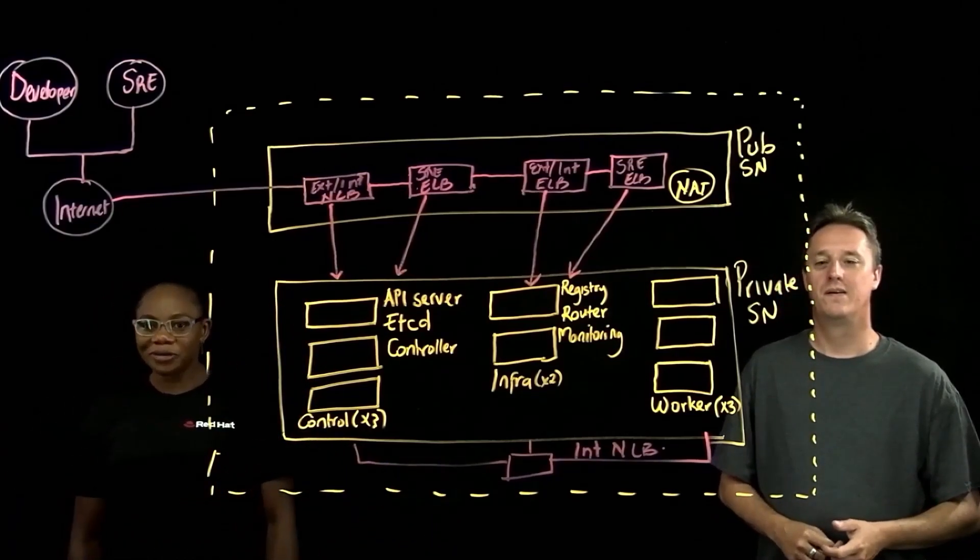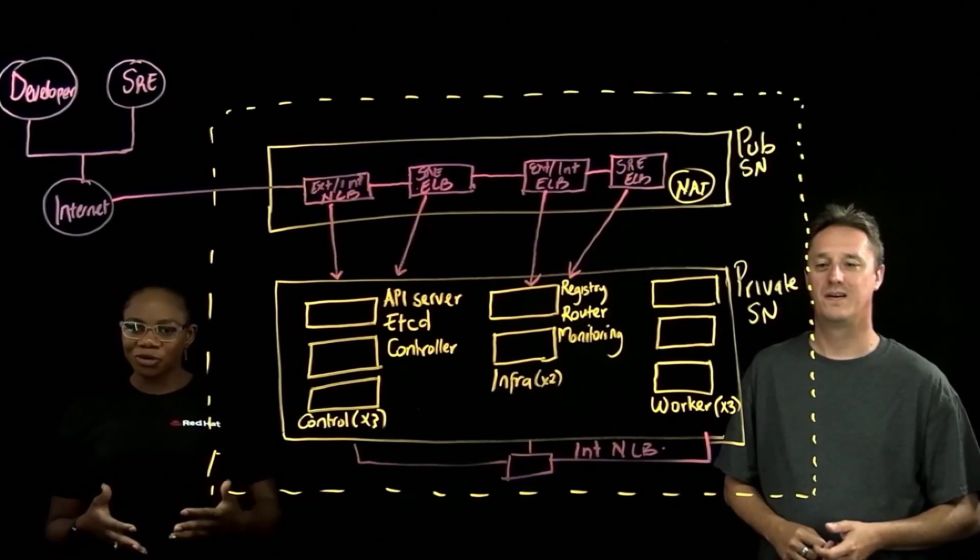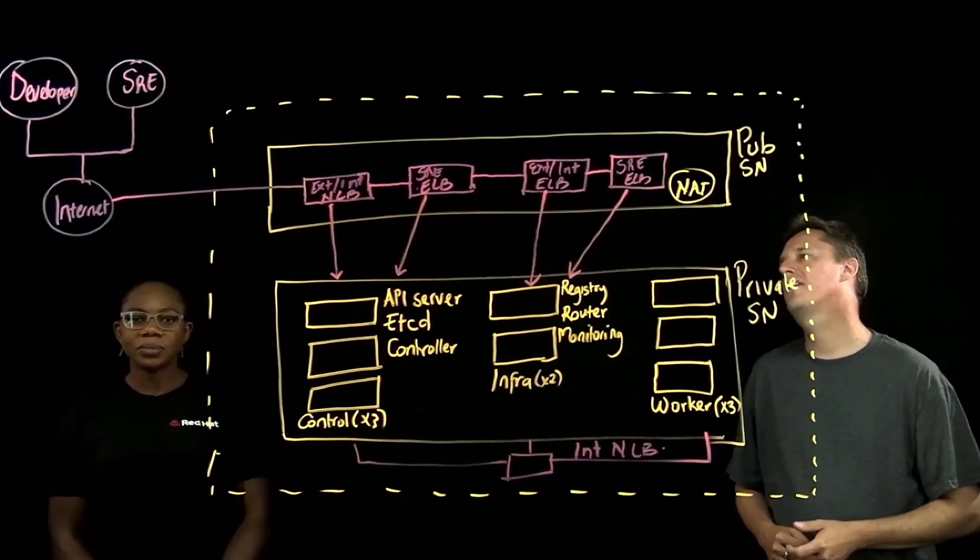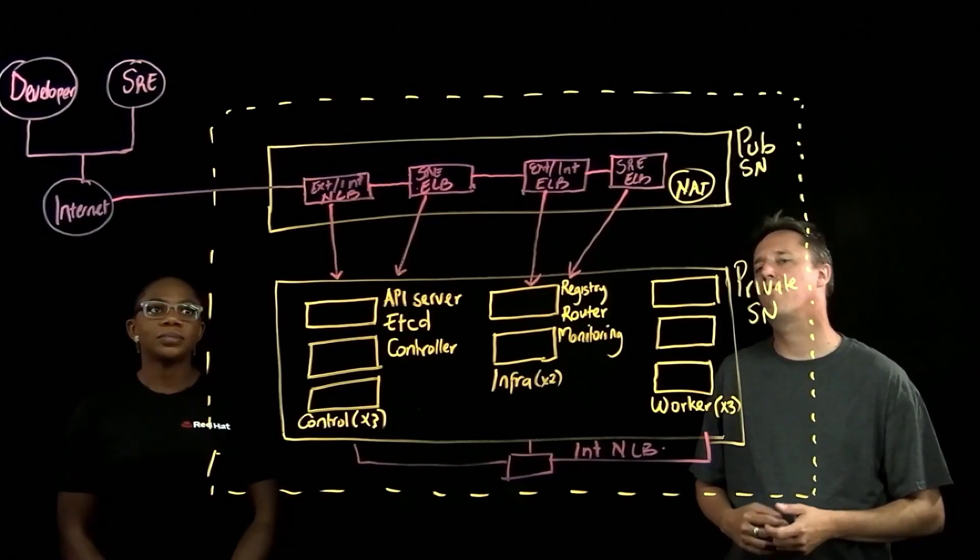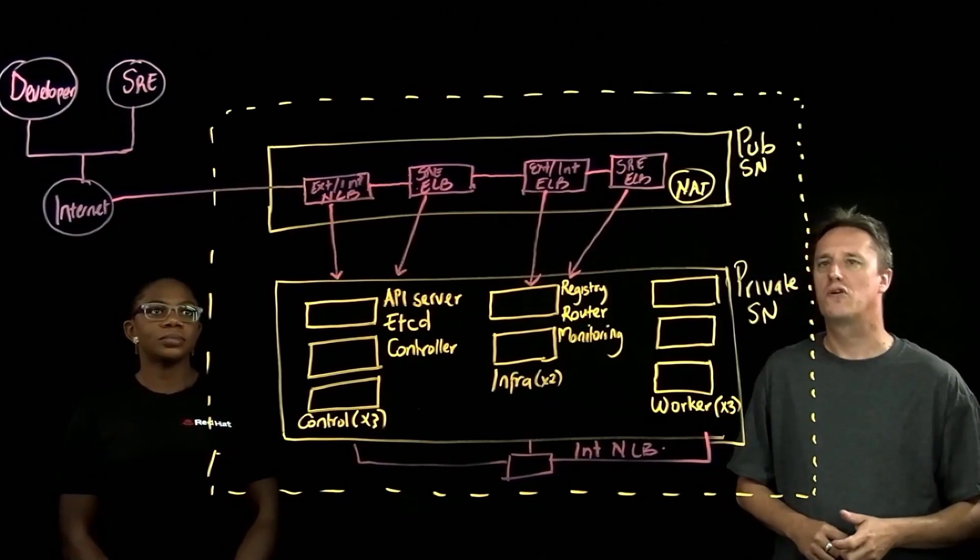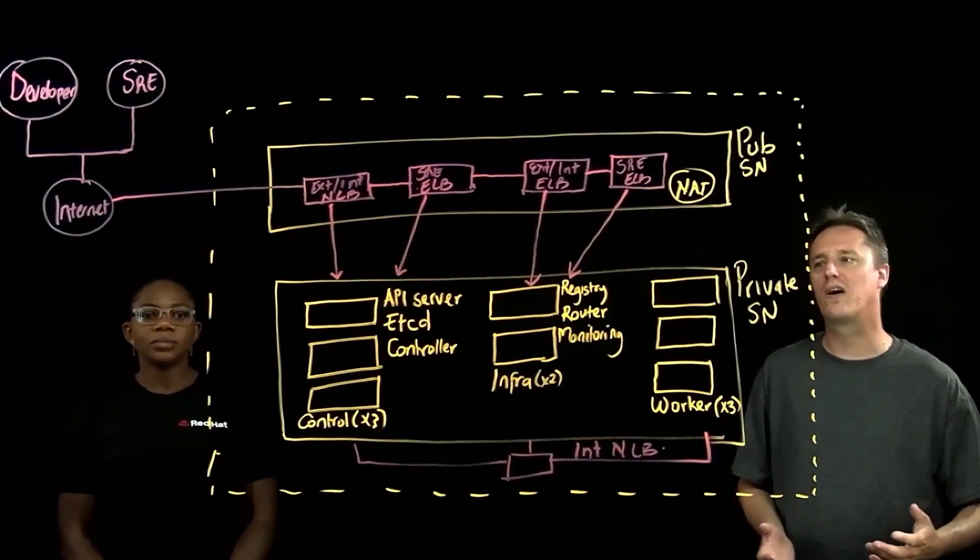Hi everyone, my name is Charlotte and I'm a Managed OpenShift Black Belt, as Ryan said. Right, so what we have here, Charlotte, is an architecture diagram of the Red Hat OpenShift service on AWS or ROSA.